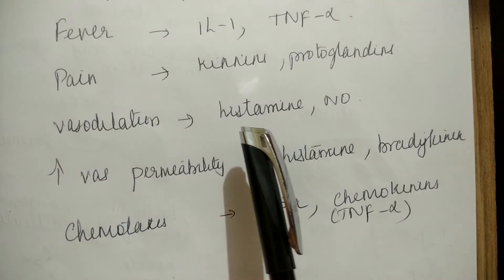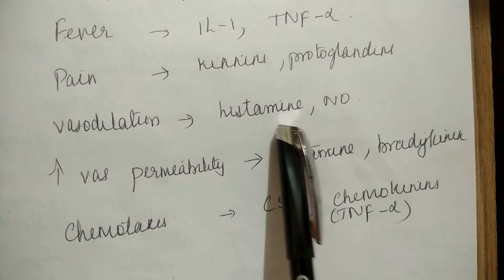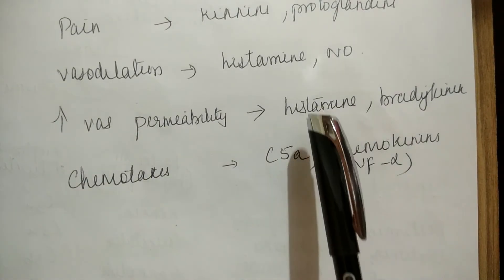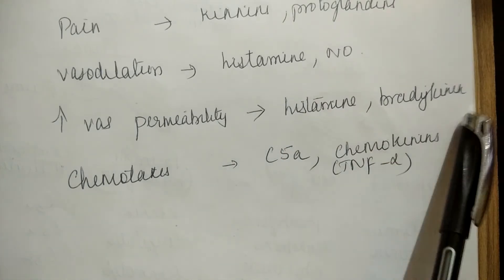Vasodilation: histamine and nitric oxide produce dilation. Increased vascular permeability: histamine and bradykinin.